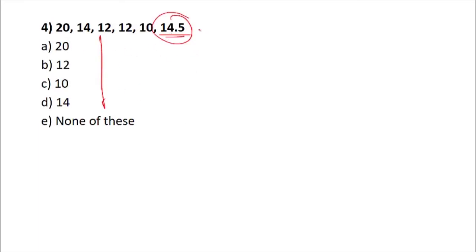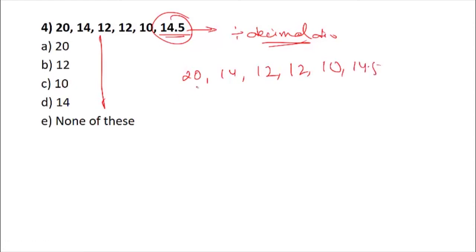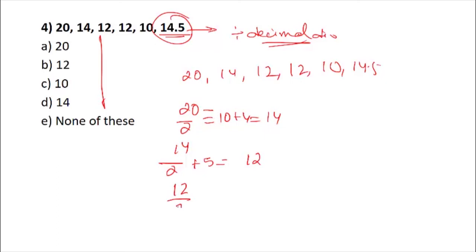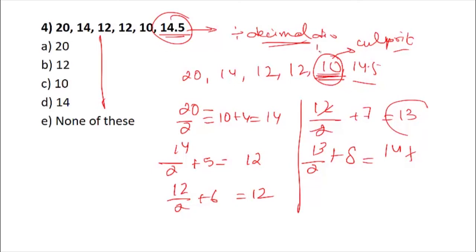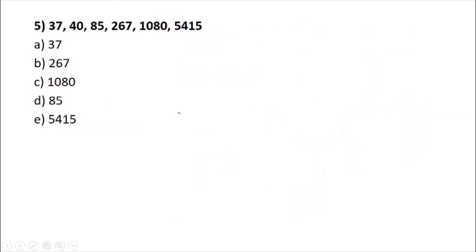Question 4: seeing a decimal in the series, it should come to mind that this involves division. The series is: 20, 14, 12, 12, 10, 14.5. The rule is: divide by 2, then add 4 to get 14; divide by 2 and add 5 to get 12; divide by 2 and add 6 to get 12 again; divide by 2 and add 7 should give 13, but we have 10. We have found the culprit! Continuing: 13 divided by 2 plus 8 = 14.5, which confirms it. The correct value should be 13, and the answer is option C.